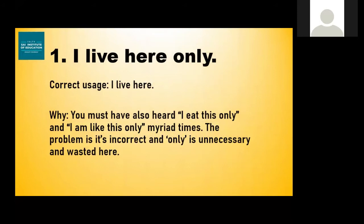The correct use is 'I live here.' You must have also heard 'I eat this only' and 'I'm like this only' many times. The problem is that it's incorrect. 'Only' is unnecessary and wasted here. So instead of using 'only,' just avoid it and say 'I live here.' So when somebody asks you where do you live, say 'I live here.'